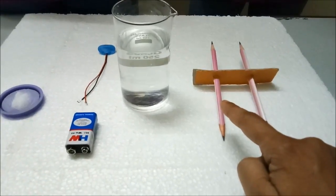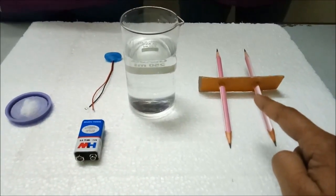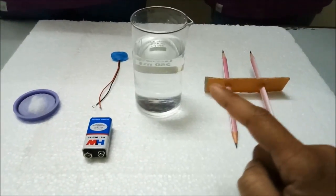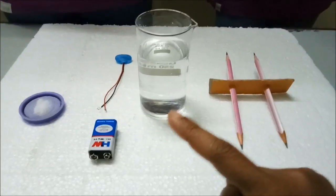Always remember oxidation takes place at anode and reduction takes place at cathode. You will see that as we pass electric current through water, water will break into hydrogen and oxygen.